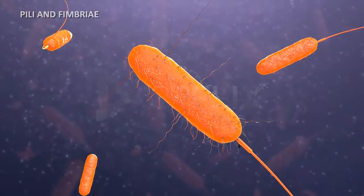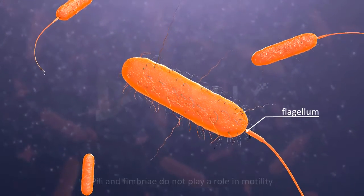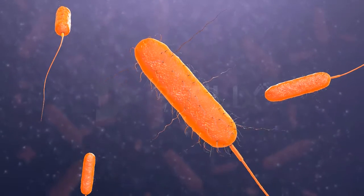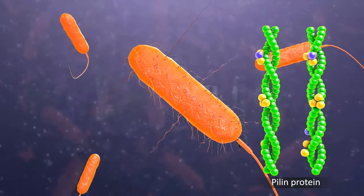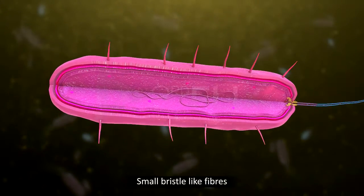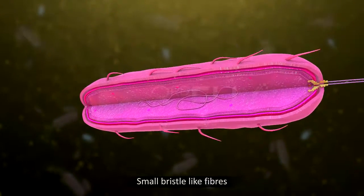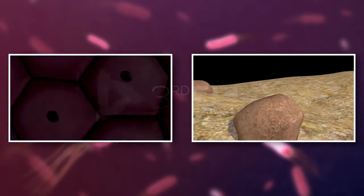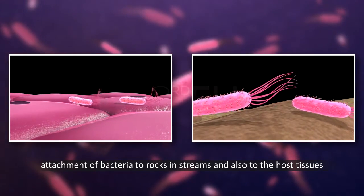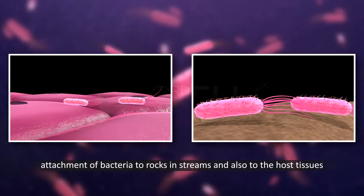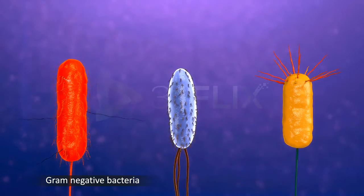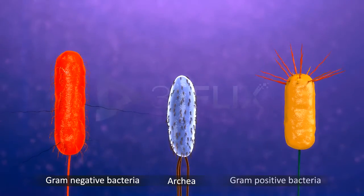In addition to flagella, there are pili and fimbria in the bacterial cell; they do not play any role in motility. Pili are elongated tubular structures made of a special protein called pilin. Fimbria are small bristle-like fibres sprouting out of the cell. In some bacteria, pili or fimbriae are useful for attachment to rocks, streams, and host tissues. Pili or fimbriae are very common in gram-negative bacteria but are also seen in some archaea and gram-positive bacteria.